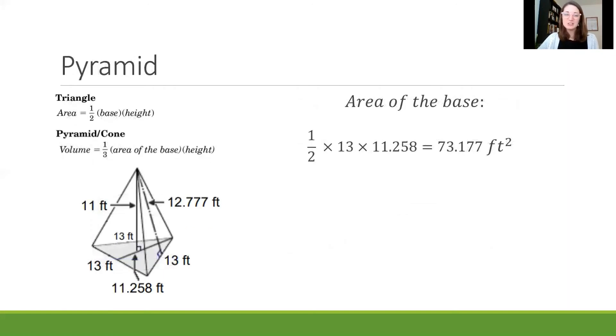For a pyramid we need to use the pyramid or cone version. So a pyramid could be a square base or a triangle base or another figure and a cone would have a circle base. So here we know we have a pyramid because we see that triangular base on the bottom. Now once again we need to know the area of the base in order to get our volume.